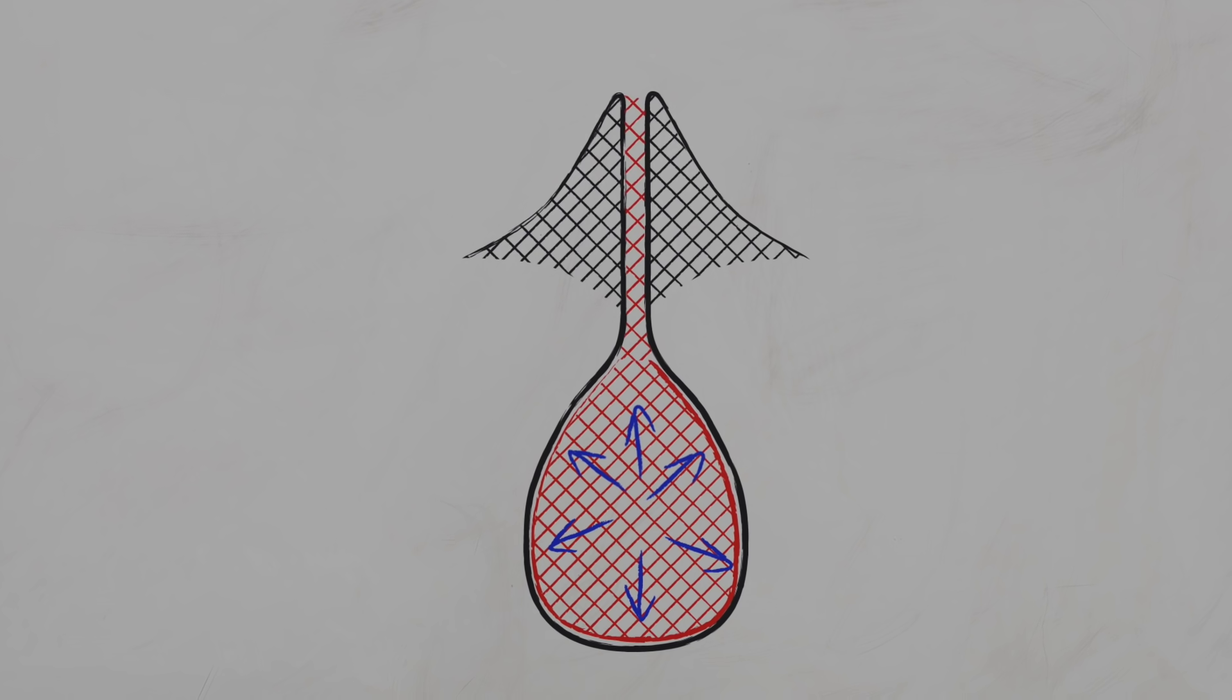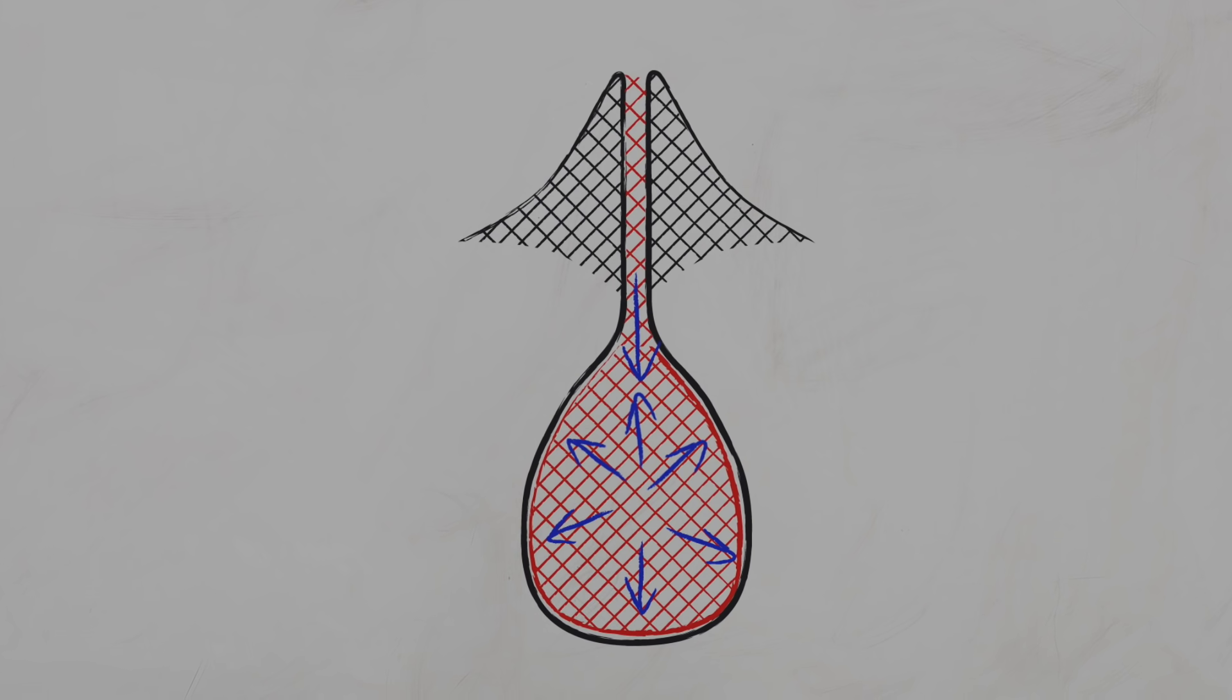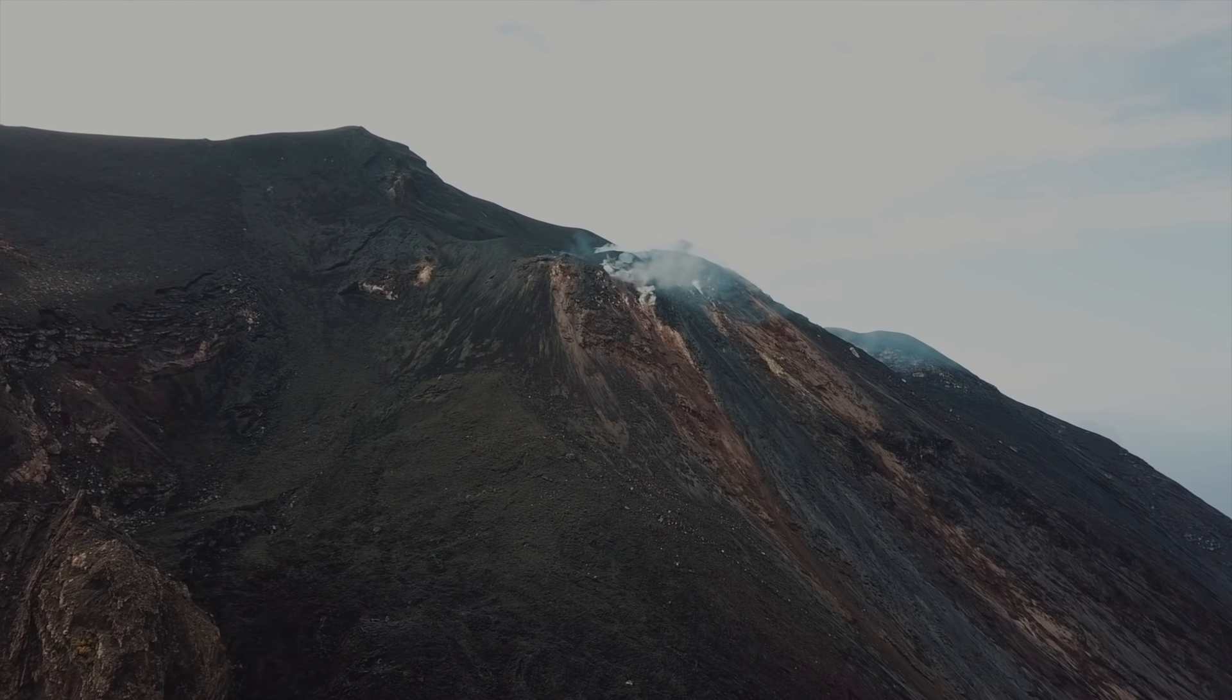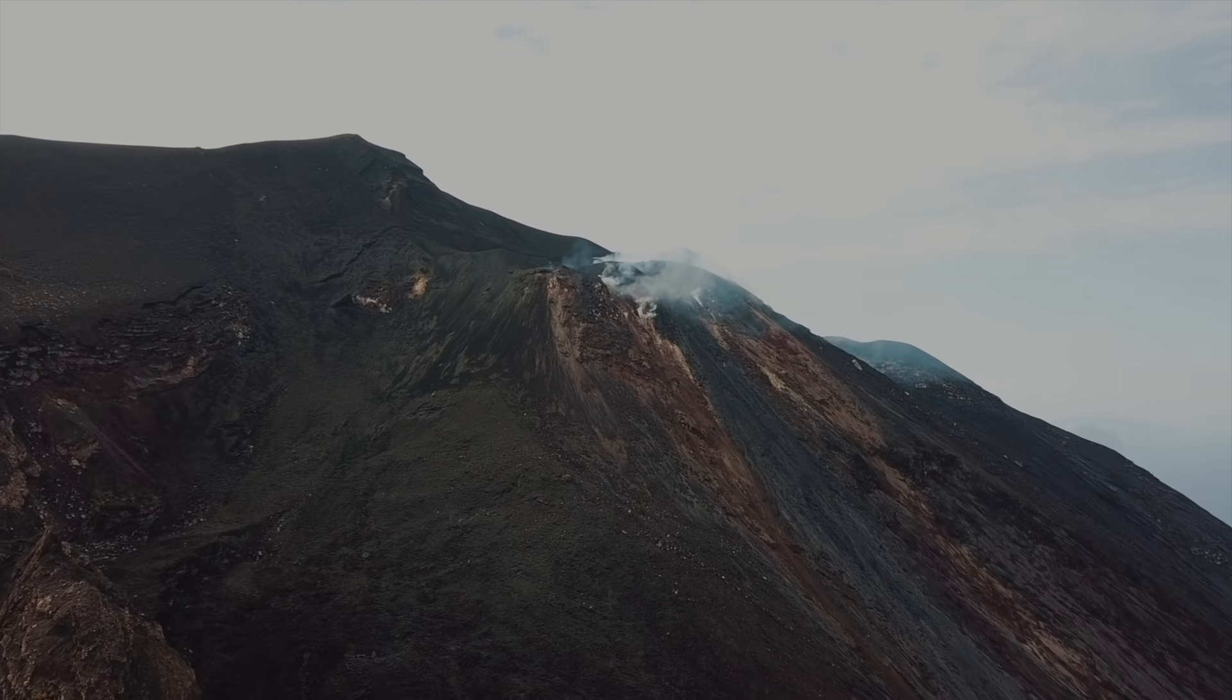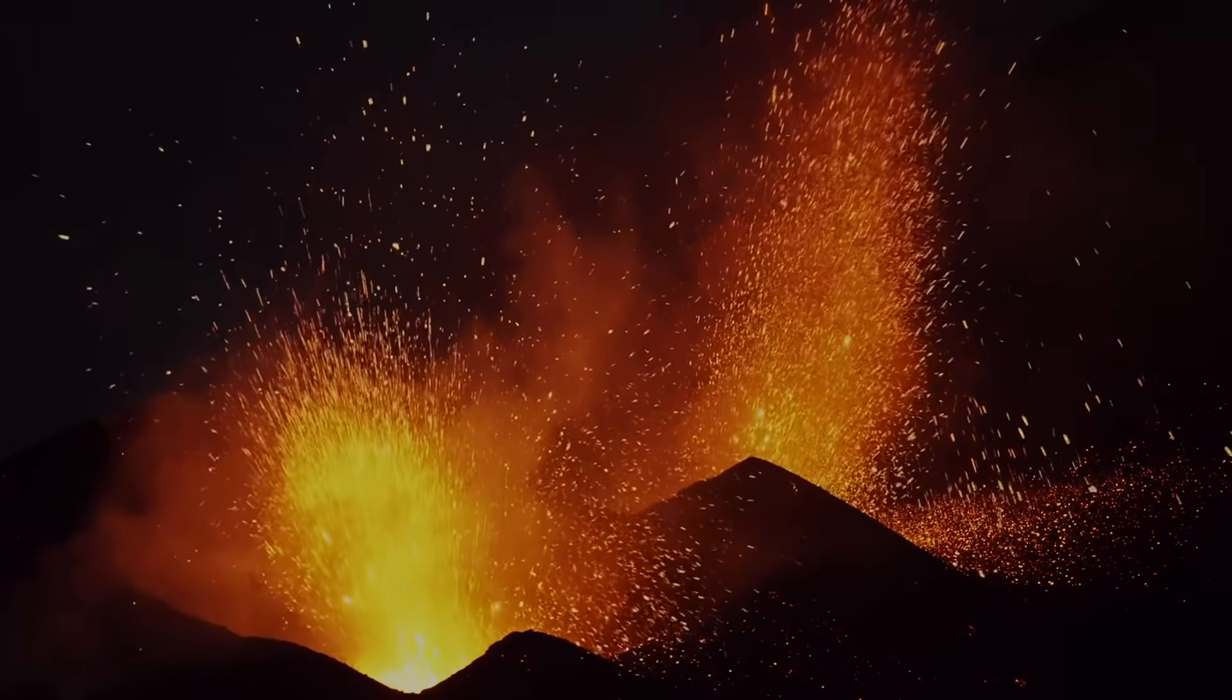Sometimes the pressure in the magma reservoir is balanced out by the pressure exerted by the column of magma above it, and then in these cases the volcano is quiet and relatively safe. But with little warning, these pressures can get out of balance and the volcano can explode, sometimes with fatal consequences.